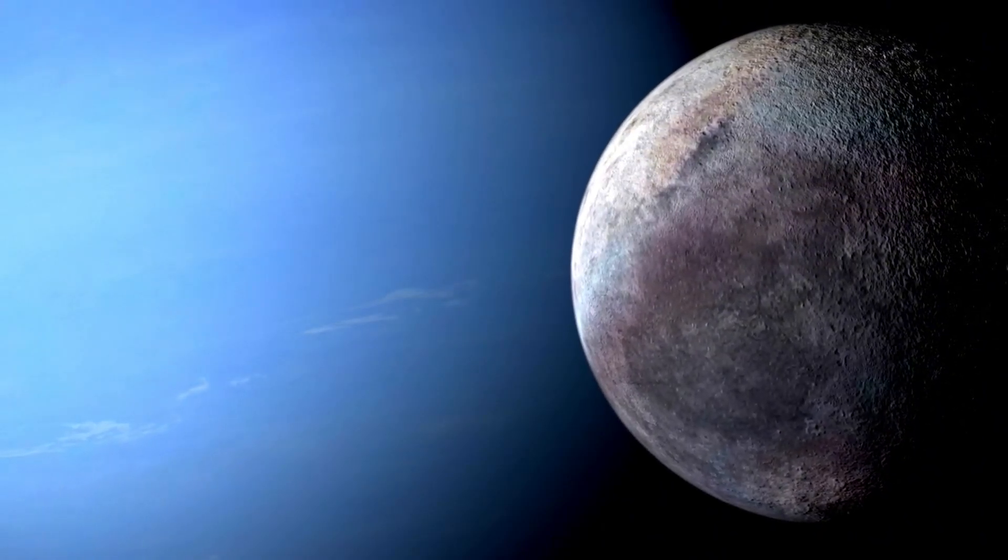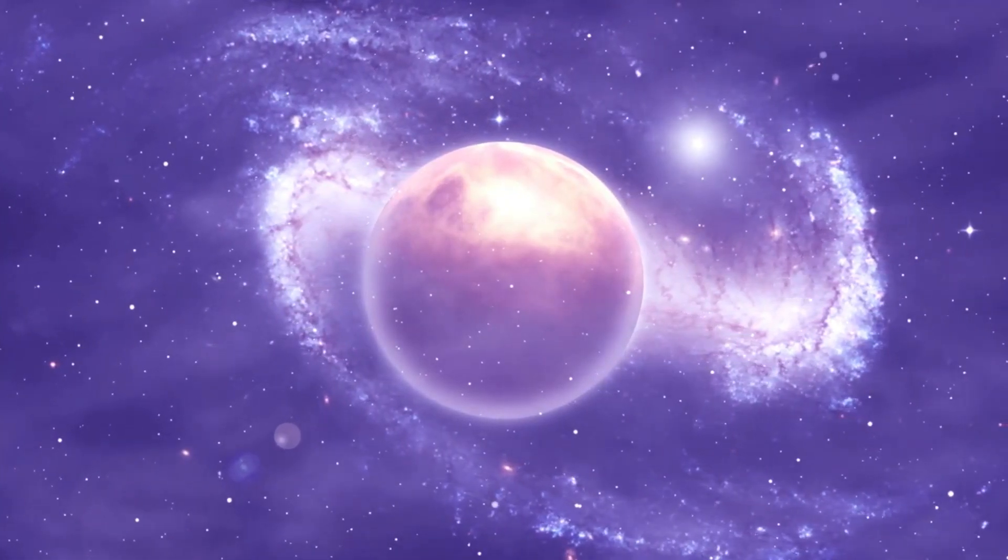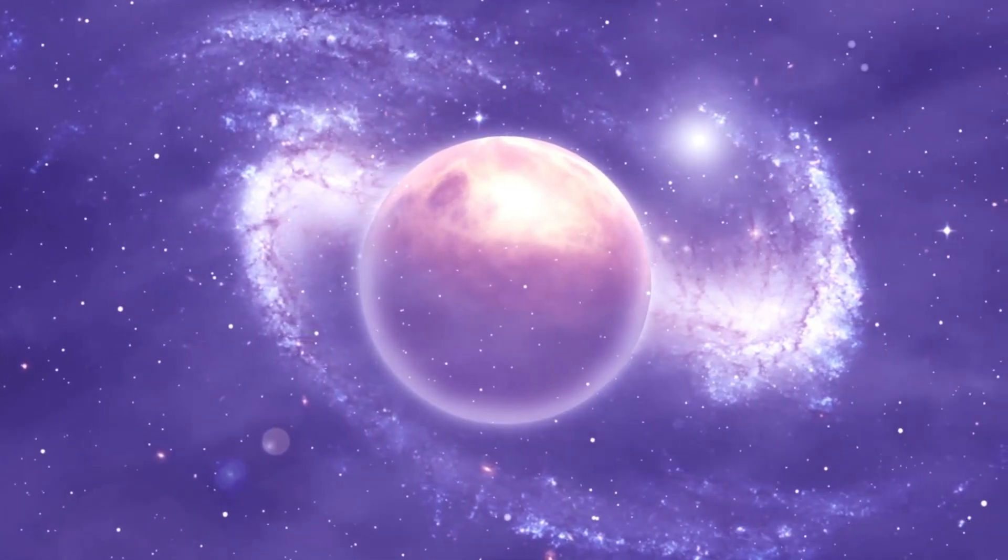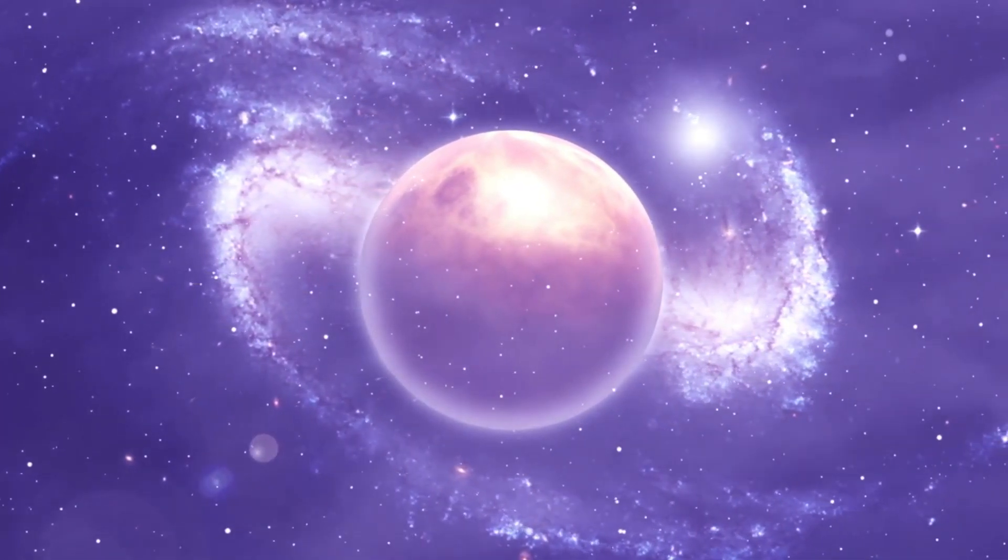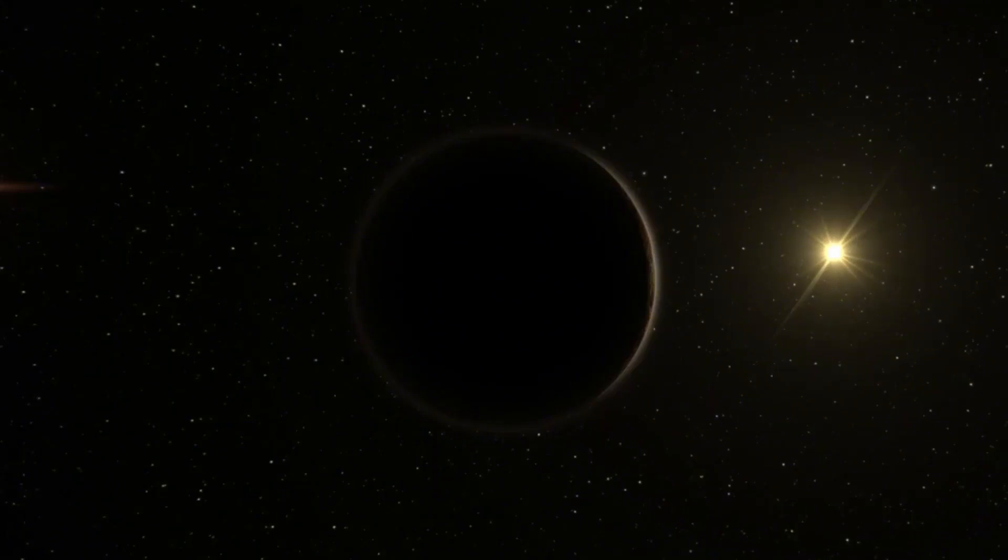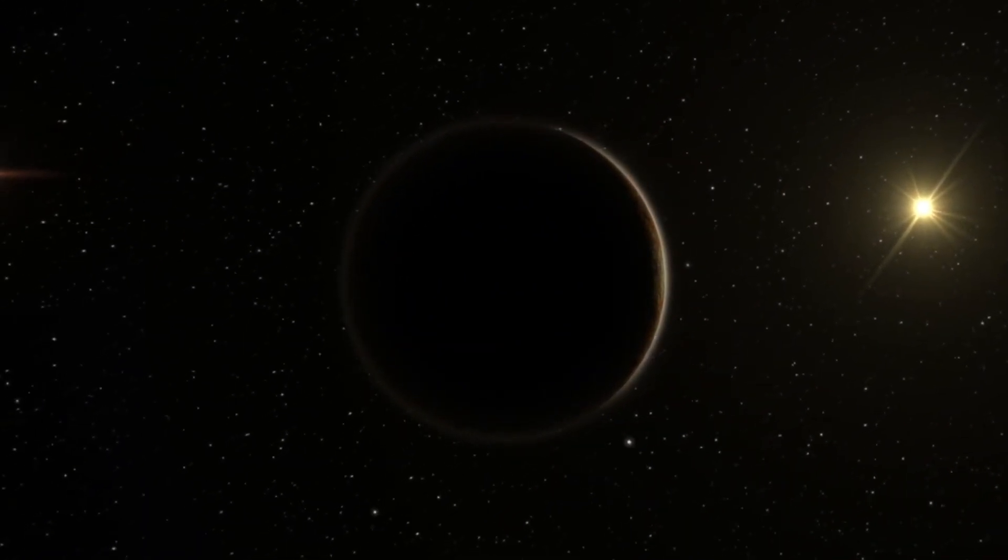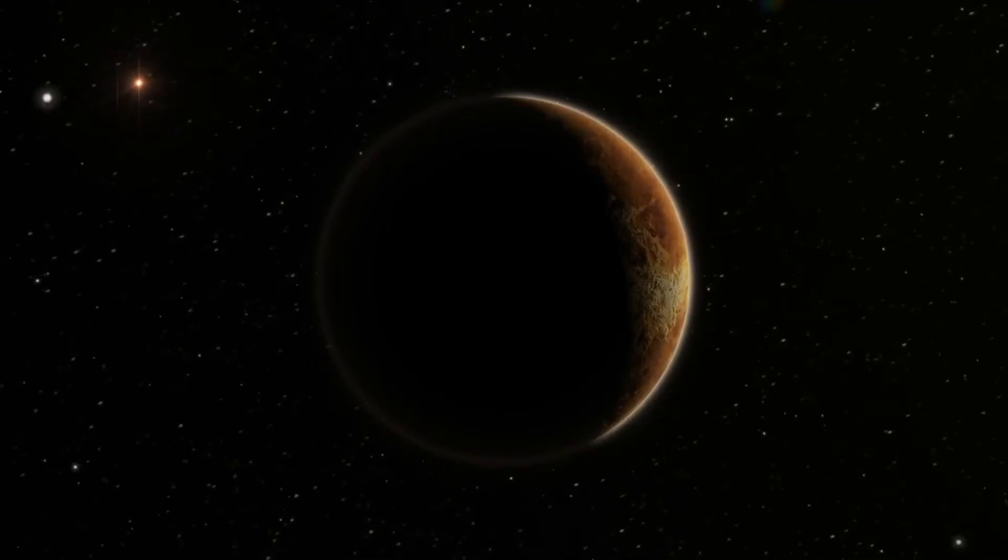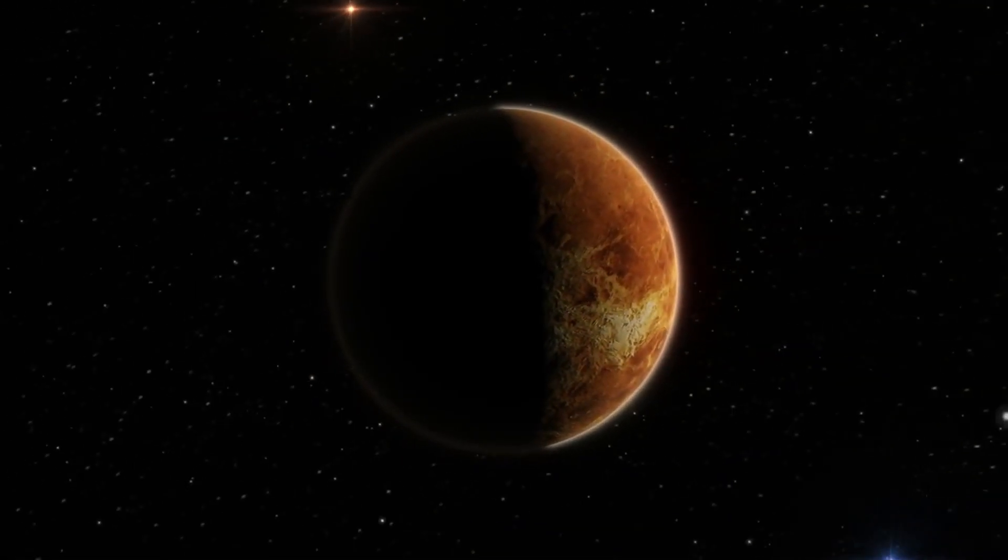Pluto's orbit closely intersects with Neptune's, which has raised concerns among astrophysicists, including Neil deGrasse Tyson and Michio Kaku, who warn of a potential disastrous impact between the two, with significant repercussions for Earth. But how could such an event happen?